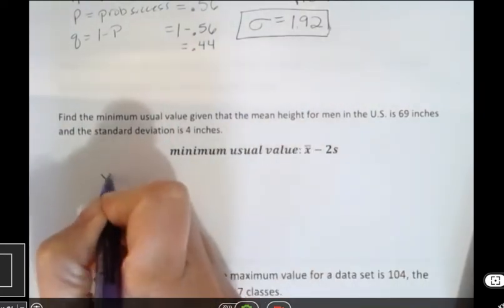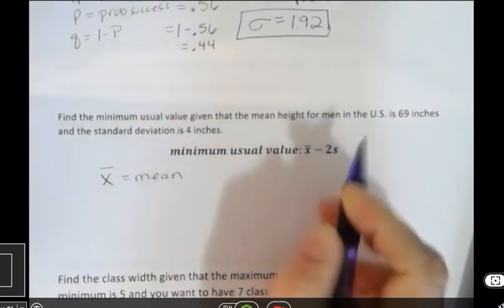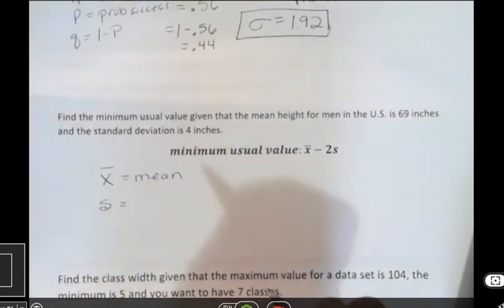And I can tell you that X bar, that's how we read that, stands for mean, and the lowercase S is the population, or the standard deviation.